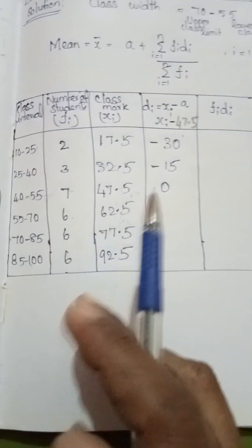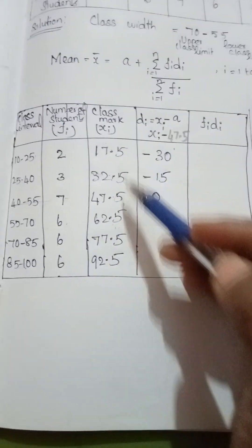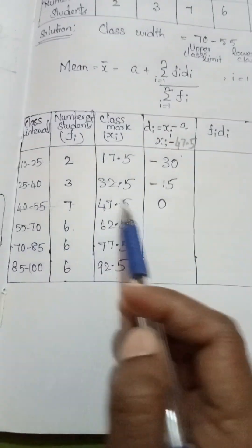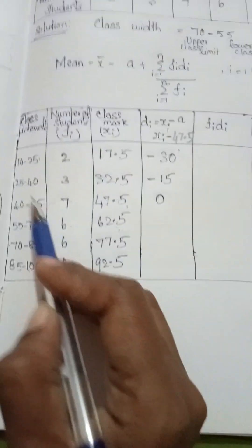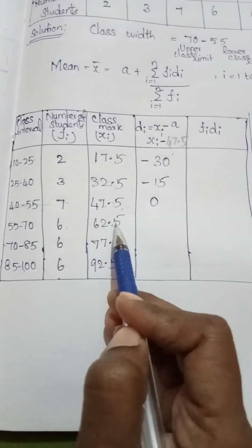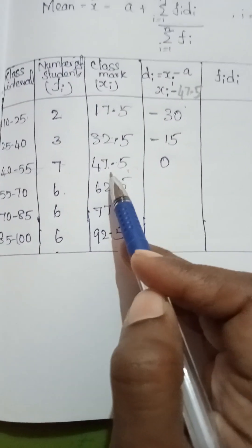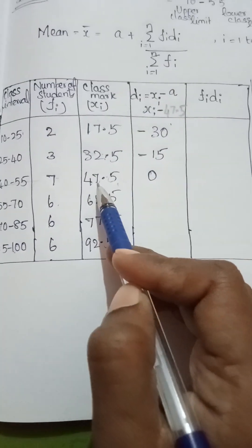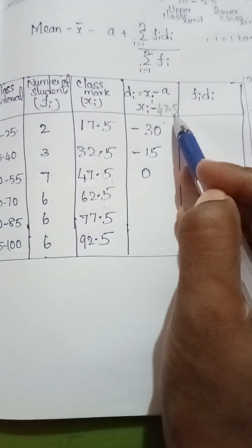Next, you choose the assumed mean. First you skip first two class intervals and the last two class intervals. The center value only you can take. Here center values are two values: 47.5 and 62.5. You can choose any one value. I am choosing 47.5. So small letter a, assumed mean is 47.5.